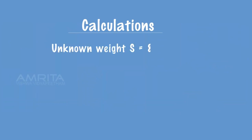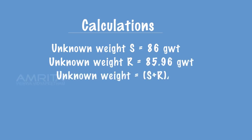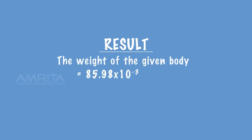Unknown weight S is equal to 86g weight. Unknown weight R is equal to 85.96g weight. Unknown weight equals S plus R divided by 2, that is equal to 85.98g weight, which is equal to 85.98 x 10 raised to minus 3kg weight.